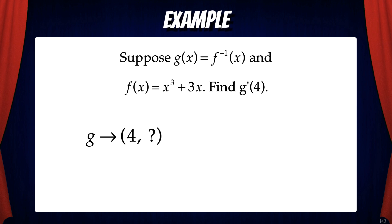Let's do an example problem. Suppose g of x equals f inverse of x and f of x equals x cubed plus 3x. Find g prime of 4. The first thing to note is that the point 4 comma something is on the g graph.